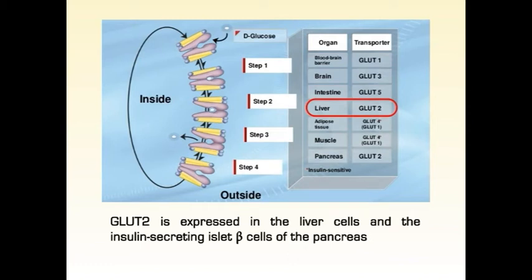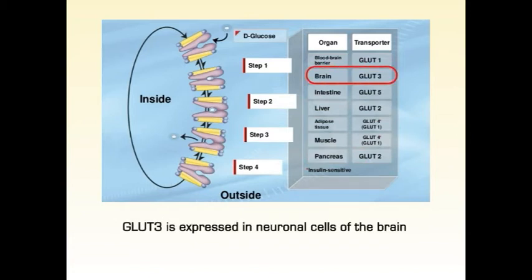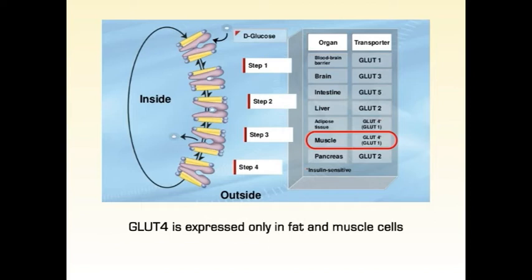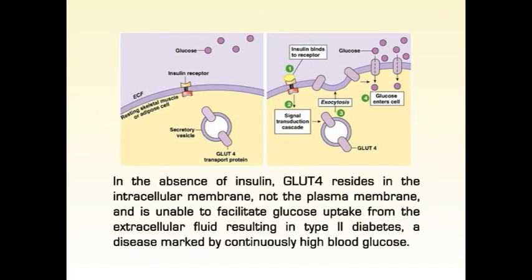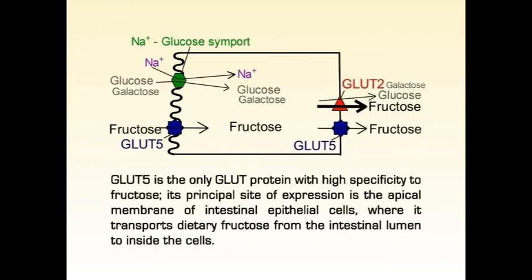GLUT2 is expressed in liver cells and the insulin-secreting islet beta cells of the pancreas. GLUT3 is expressed in neuronal cells of the brain. GLUT4 is expressed only in fat and muscle cells — cells that respond to insulin by increasing the uptake of glucose, thereby removing glucose from the blood. In the absence of insulin, GLUT4 resides in the intracellular membrane, not the plasma membrane, and is unable to facilitate glucose uptake, resulting in type 2 diabetes, a disease marked by continuously high blood glucose. GLUT5 is the only GLUT protein with high specificity to fructose, and its principal site of expression is the apical membrane of the intestinal epithelial cells, where it transports dietary fructose from the intestinal lumen into the cells.